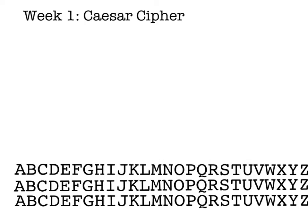In week one of Code Breaking Club we looked at one of the oldest methods of encoding a message, called the Caesar cipher, named after Julius Caesar — meaning it's over 2,000 years old. The problem with it being 2,000 years old is it's going to be pretty easy to crack once we know how.